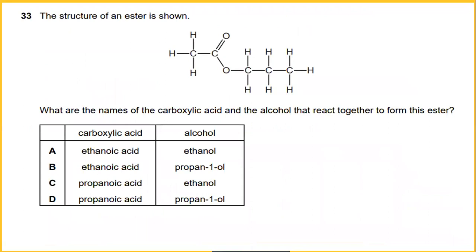The structure of an ester is shown. What are the names of a carboxylic acid and the alcohol that react together to form this ester? You can see from this diagram, I would say that this is the reaction between carboxylic acid, which is ethanoic acid, and the propanol. So the answer would be B.